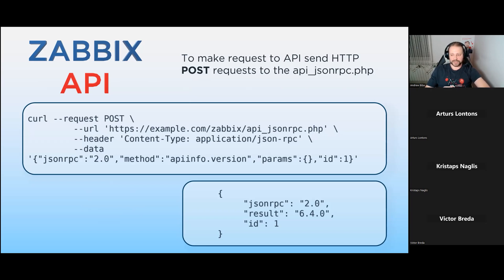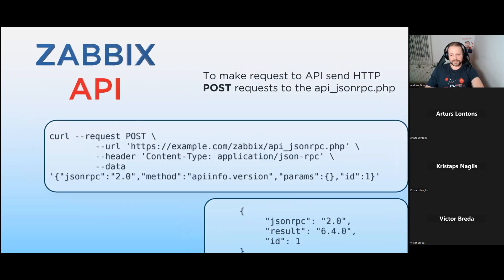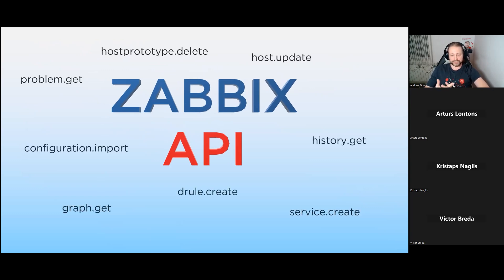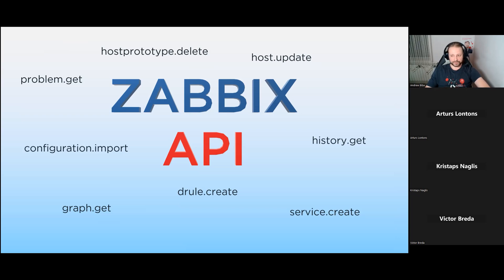There are a lot of different methods, not just info version. You can use Zabbix API to cover a lot of different jobs in Zabbix. Zabbix API is a powerful tool that allows users to interact with the Zabbix monitoring system. It provides a way to automate tasks, fetch monitoring data, manage hosts and alerts, and perform various administrative functions. By using the API, users can integrate Zabbix with other systems and create custom monitoring solutions.